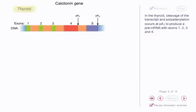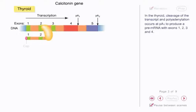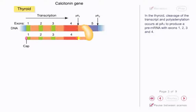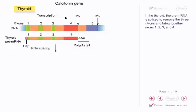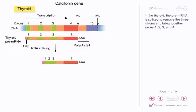In the thyroid, cleavage of the transcript and polyadenylation occurs at PA1 to produce a pre-mRNA with exons 1, 2, 3, and 4. In the thyroid, the pre-mRNA is spliced to remove the three introns and bring together exons 1, 2, 3, and 4.